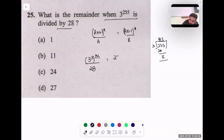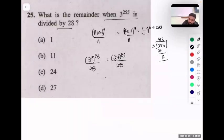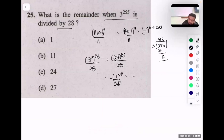This becomes 27 raised to power 85 upon 28. The remainder formula gives minus 1 raised to power n, where n is odd. So minus 1 raised to power 85 makes it minus 1 only. The remainder is minus 1, so my remainder is 28 minus 1, which is 27. That's my answer.